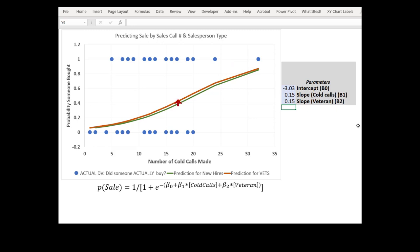Now we can see that veterans are only a tiny bit more effective at the same number of cold calls as a new hire, and if we set it to 0 there should be no difference at all and the lines just perfectly overlap one another. Great.